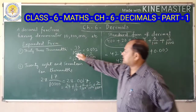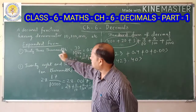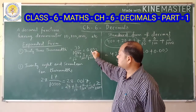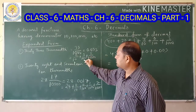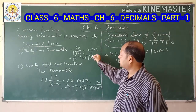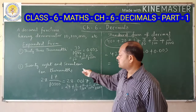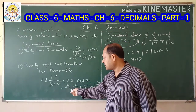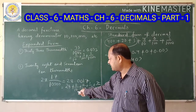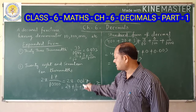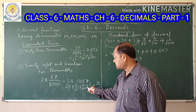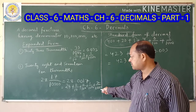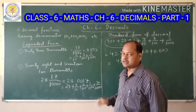Now let us also write the expanded form of the earlier examples. For 0.033: 0 by 10 plus 3 by 100 plus 3 by 1000. For 28.0017: 28 is the whole part, plus 0 by 10, plus 0 by 100, plus 1 by 1000, plus 7 by 10,000. This is the expanded form of these decimal numbers.